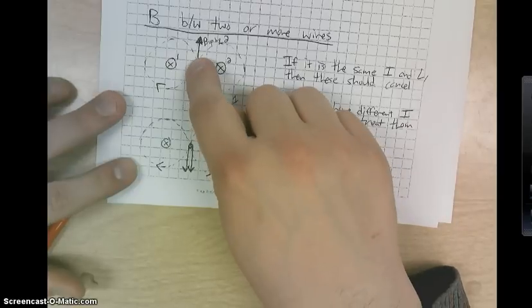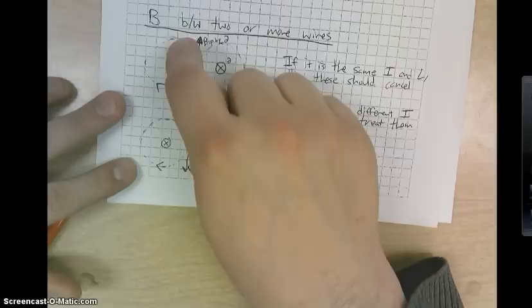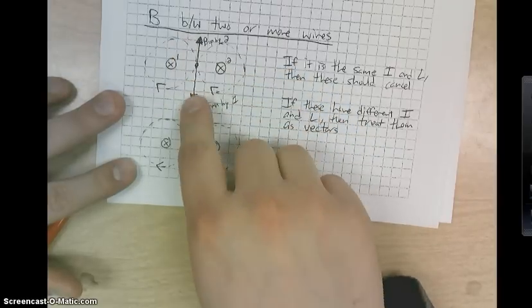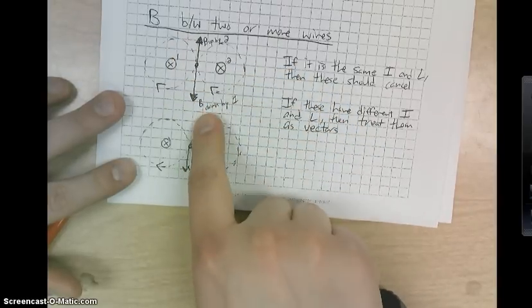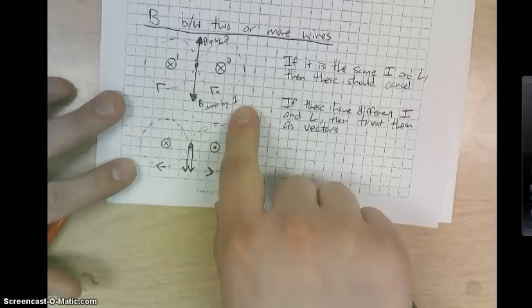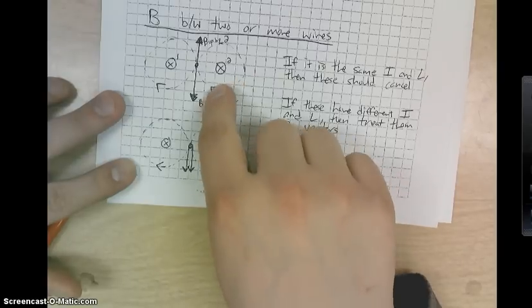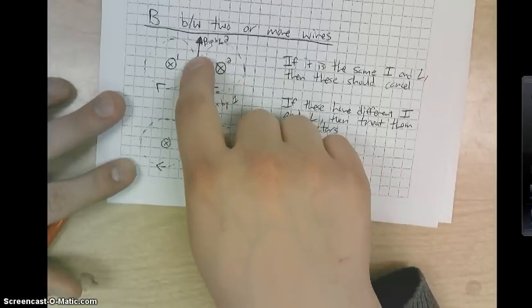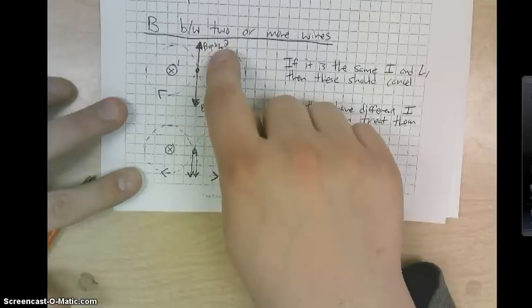But that means at this middle point from this wire, you're going to produce a field that is down. So there's a magnetic field down by wire 1. In this one, if we follow it around, it's going to be going up at that point. So there's a field up by 2.